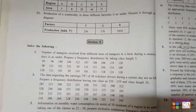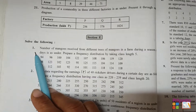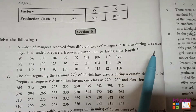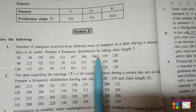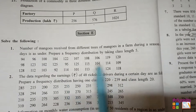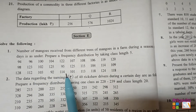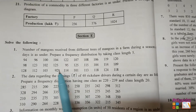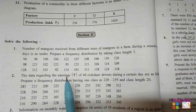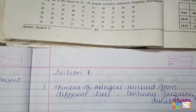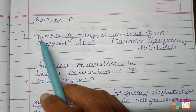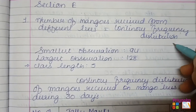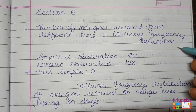Chapter 2, Presentation of Data, Section E, page 62. Question 1: number of mangoes received from different trees in a farm during a season is given. Prepare a frequency distribution by taking class length 5. Here we are going to make a tally marking. If the data has more than 10 values, we create a continuous frequency distribution. Since the number of mangoes is large, we will use continuous, not discrete, frequency distribution.